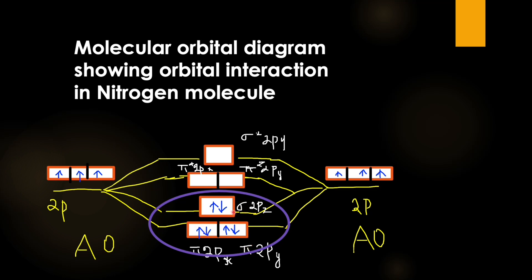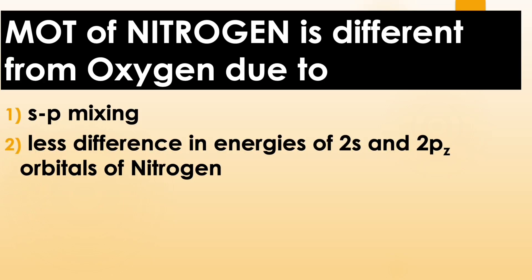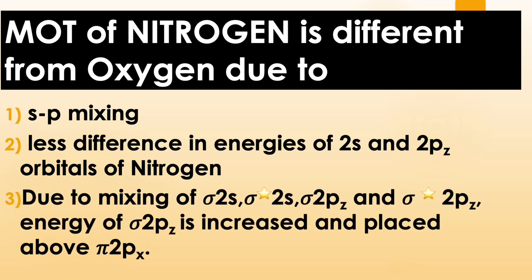Hence, molecular orbital diagram of nitrogen is different from oxygen due to sp mixing and less difference in energies of 2s and 2pz orbitals of nitrogen. Mixing of sigma 2s, sigma star 2s, sigma 2pz, and sigma star 2pz energy of sigma 2pz is increased and placed above pi 2px. Thanks for watching.